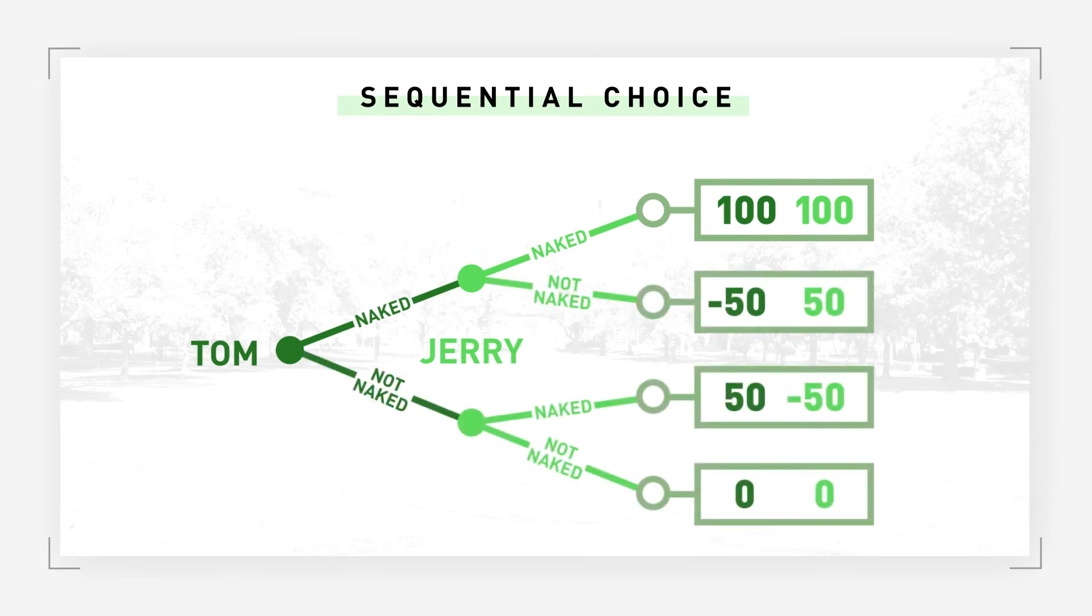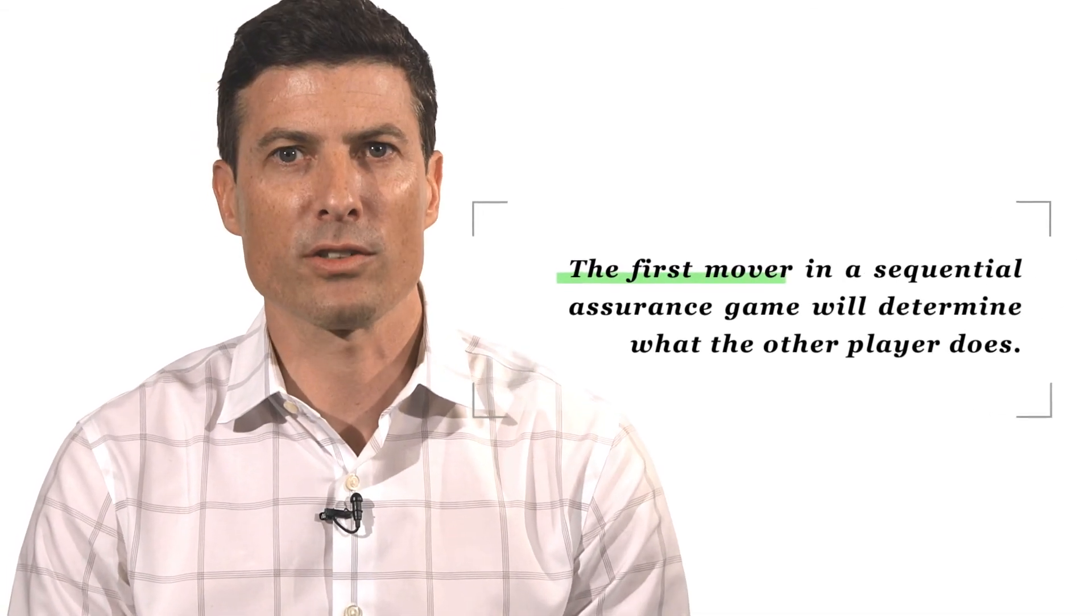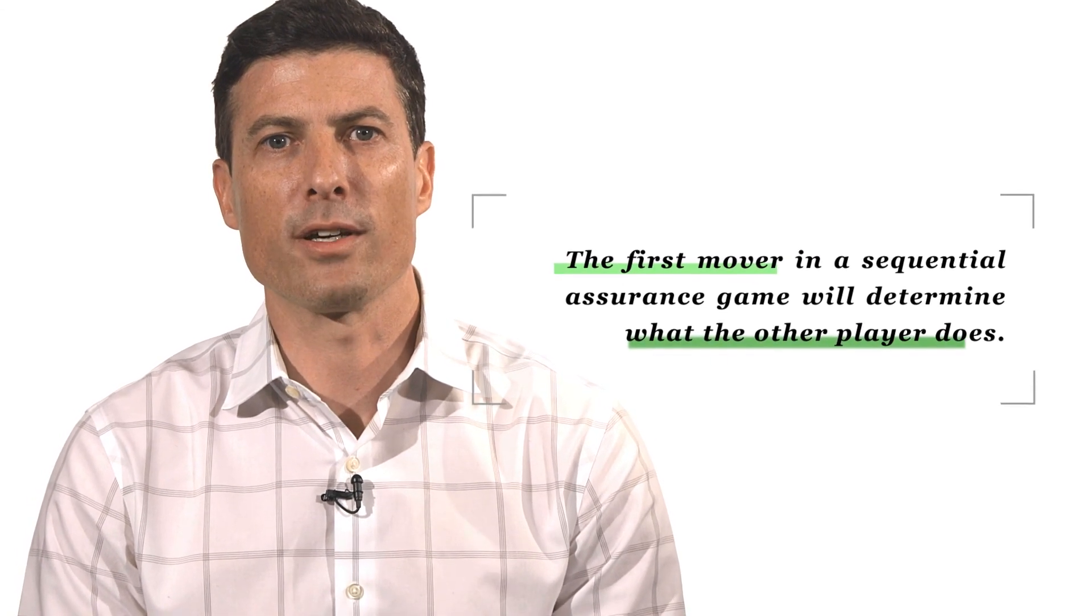However, if Jerry knows that Tom has no intention of going naked, Jerry will stay home to avoid the humiliation payoff. Who goes first will likely depend on who has more guts, so the first mover in a sequential assurance game will determine what the other player does.